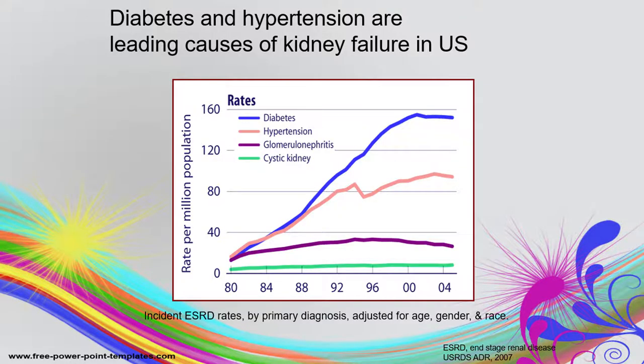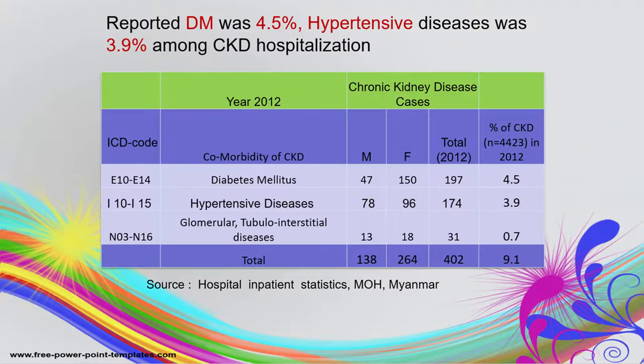What are the underlying causes of CKD? According to the US USRDS data, the highest cause is diabetic nephropathy, followed by hypertension. When we look at our own country, according to the Ministry of Health data from 2012, the highest cause of CKD is diabetic nephropathy at 4.5% and hypertension at 3.9%.